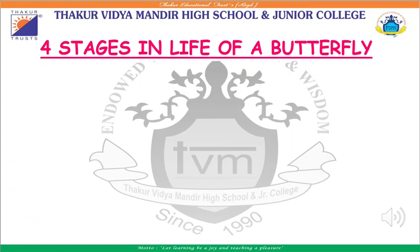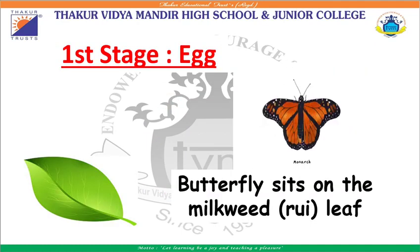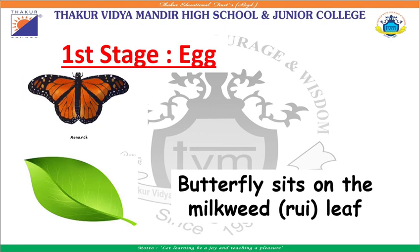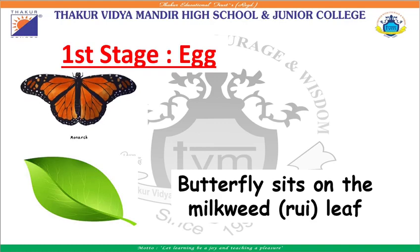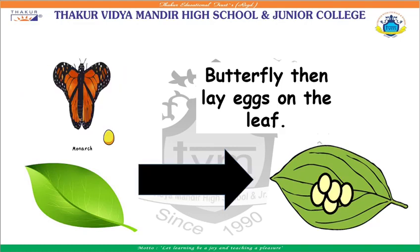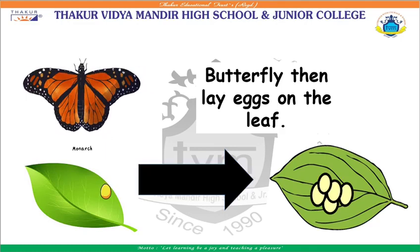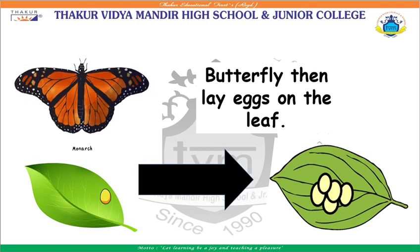There are four stages in the life of a butterfly. Here, we will see the life cycle of a plain tiger butterfly. First, the plain tiger butterfly sits on the milkweed or a rue plant's leaf. You should note that different types of butterfly sit on different plant's leaves. After sitting on the leaves, the butterfly lays eggs on the leaves. This is the first stage of the life cycle of the butterfly.